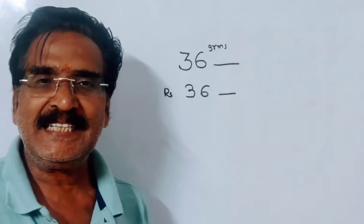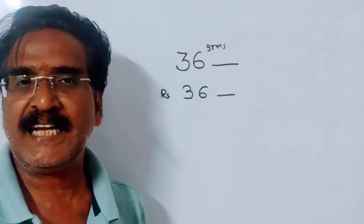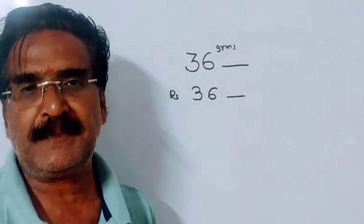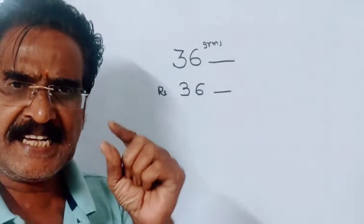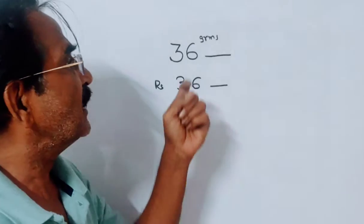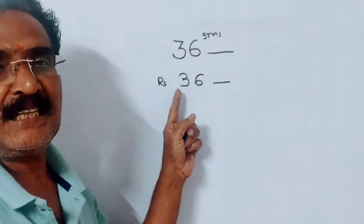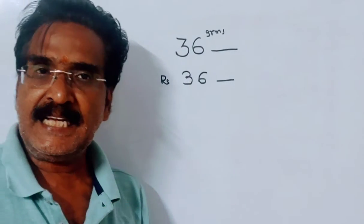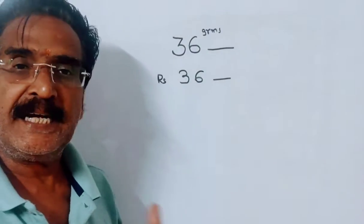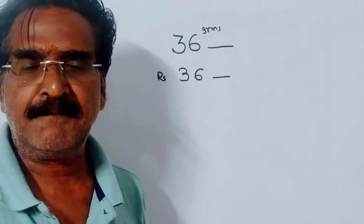Friends, here the merchant sells his goods at a loss of 12.5%. Say each 1 gram costs 1 rupee. So 36 grams is worth 36 rupees. He sells his 36 worth of goods at a loss of 12.5%.